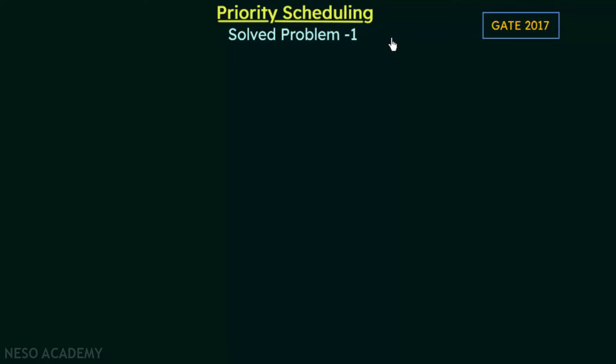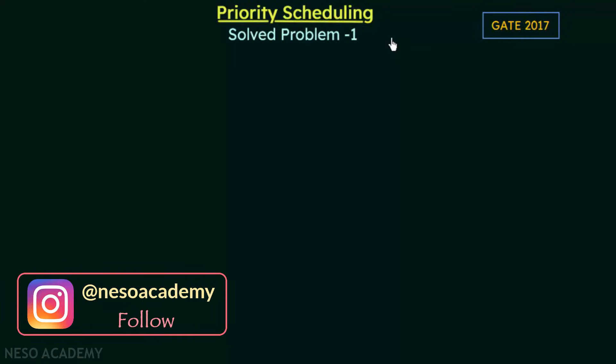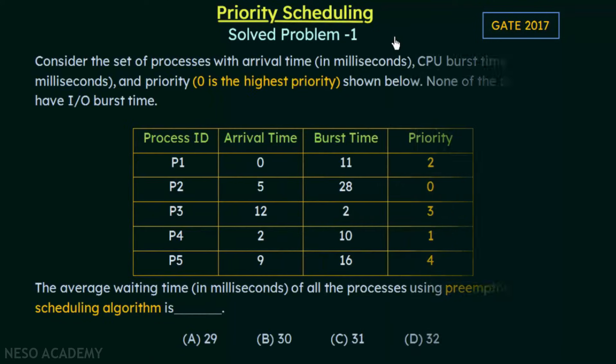In the previous lecture we discussed about priority scheduling and we saw how it works. In this lecture we will be discussing a solved problem on priority scheduling. This question was also asked in GATE CS 2017. Let's see what the question is and how we can solve it.